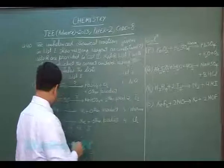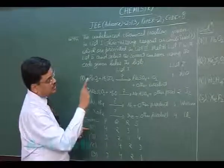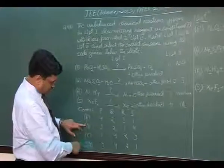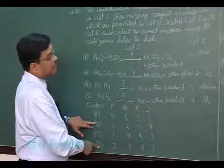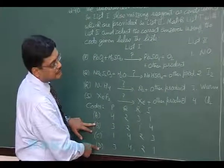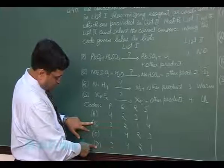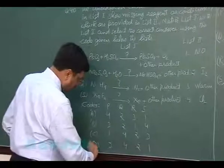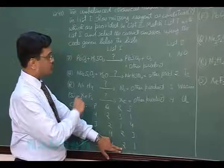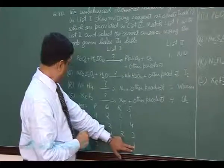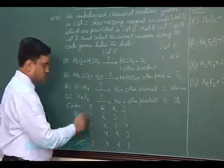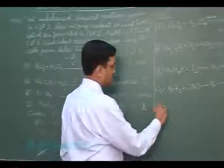So the option is P matches with third, that is B and D. And then Q matches with 4, that is only D option. And then R matches with 2 and S matches with 1. So the answer is D.